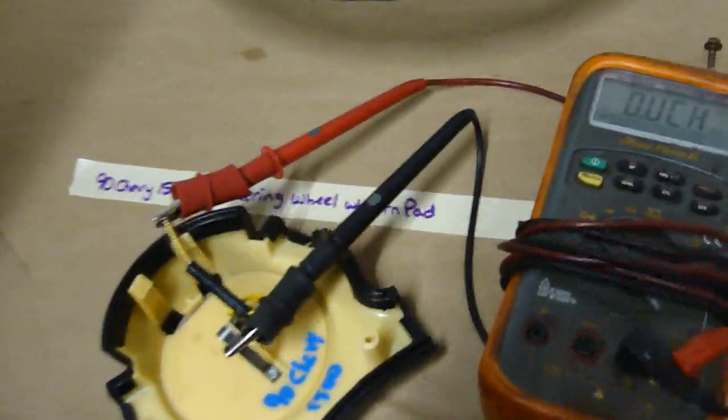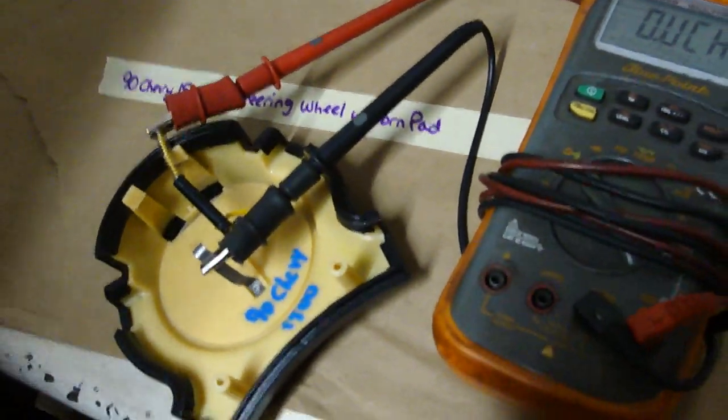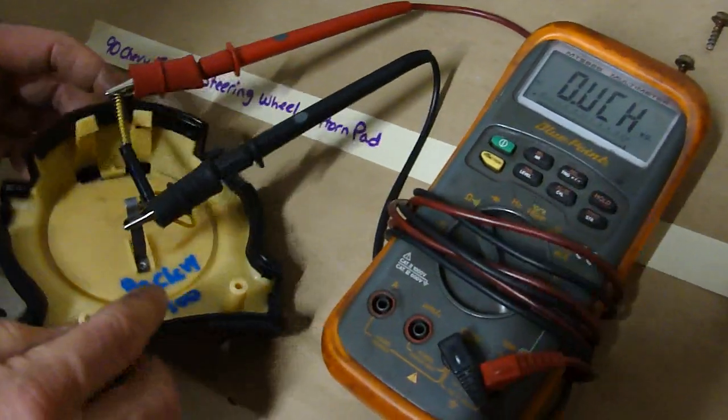I'm working with a 1990 Chevy 1500 series steering wheel. Right now we're going to test the horn pad.